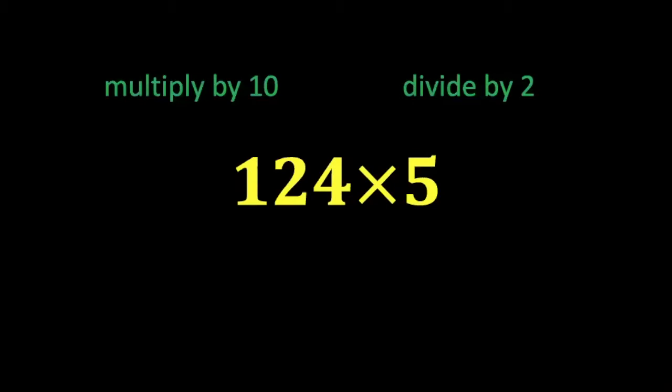Well look at that. Multiplying by 10 is pretty easy because you just move a decimal point around and dividing by 2, well you just divide by 2. Anyway, let's try it both ways here.